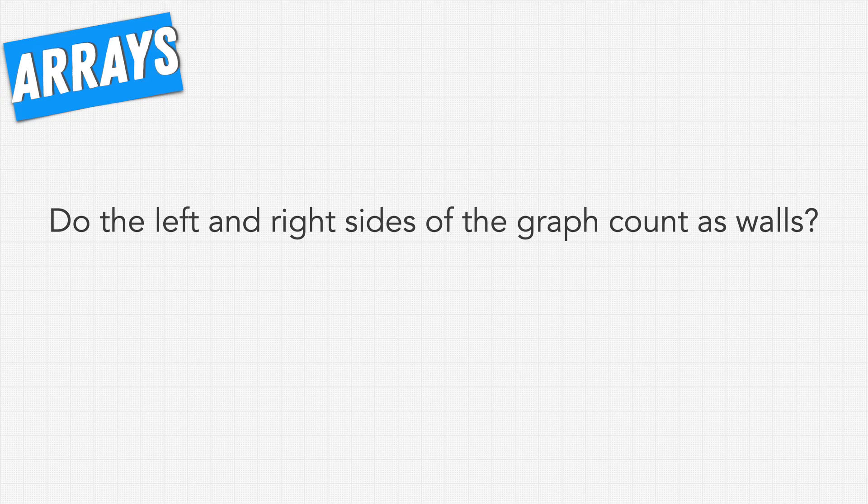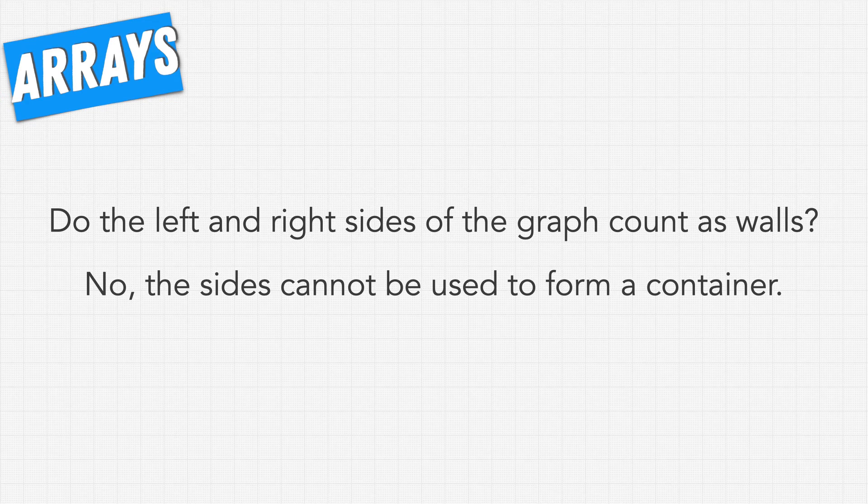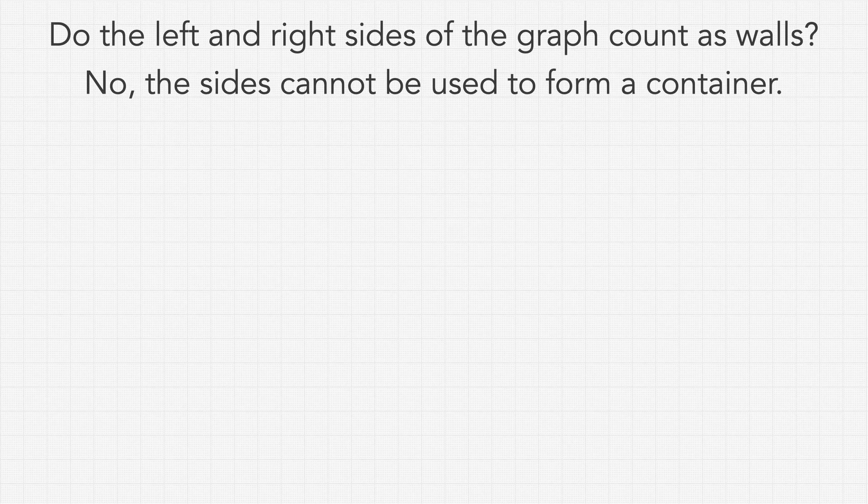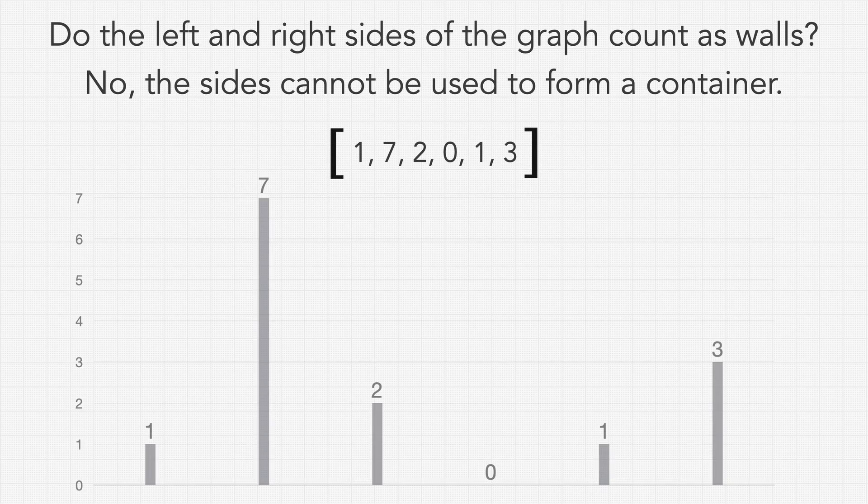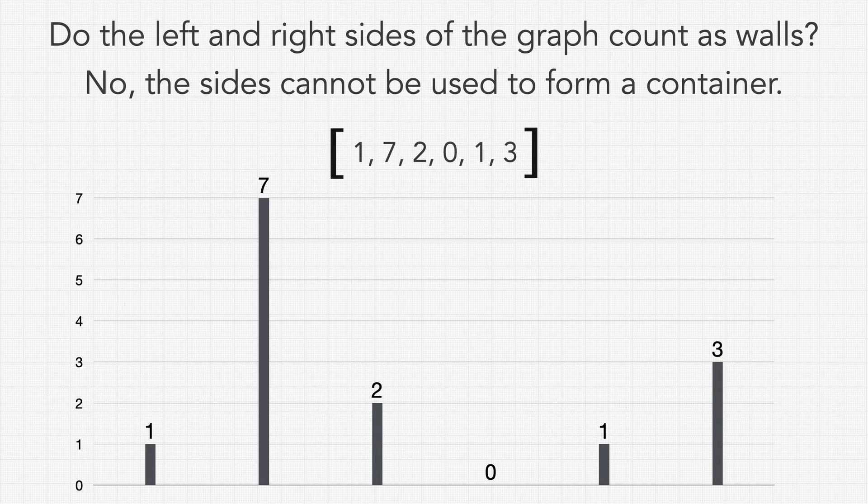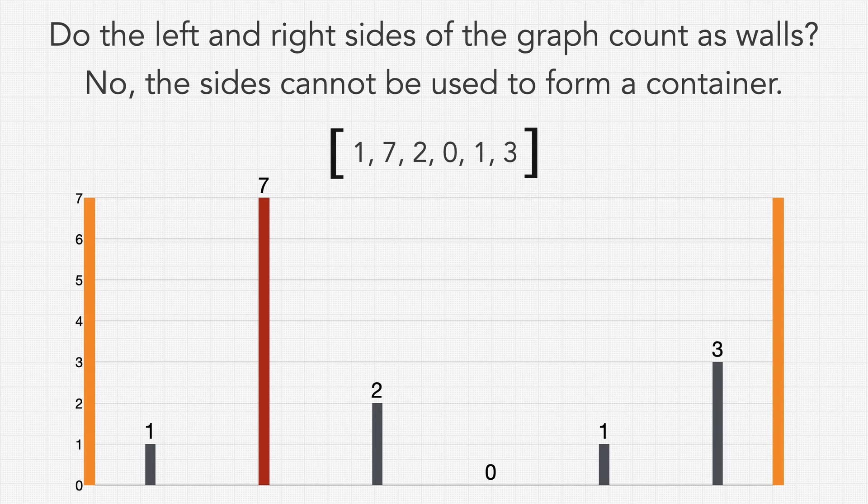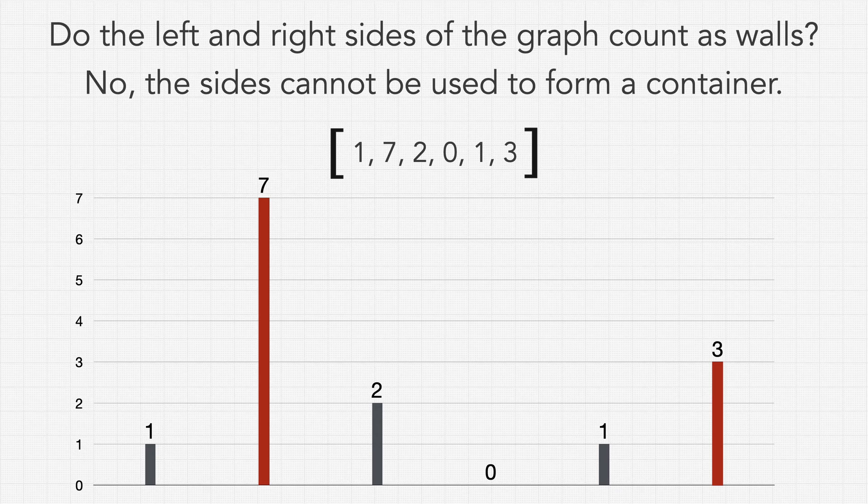The next question we might ask is do the left and right sides of the graph count as walls? And the answer is no, the sides cannot be used to form a container. So what does that mean? Well let's imagine we're given this array which becomes this bar chart. We cannot for example take this 7 and form a container using any of the walls on the left or the right side of our bar chart. We have to use a value inside of the array in order to form the other wall. In this case the biggest container would be formed from the 7 and the 3. So now we know that we must form a container using two values in this array.